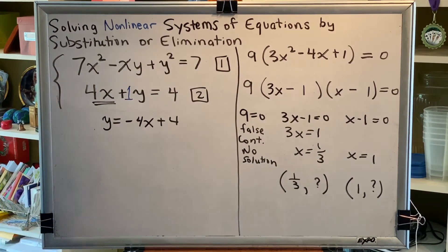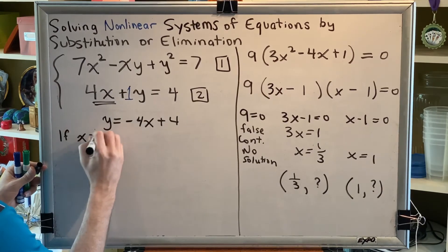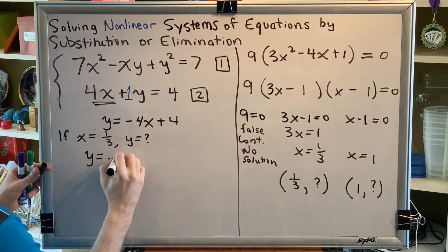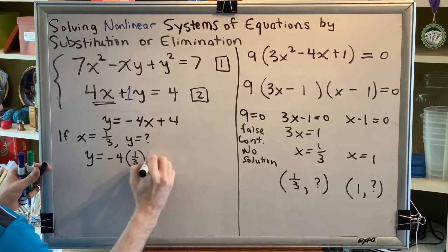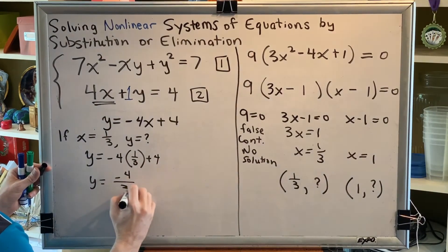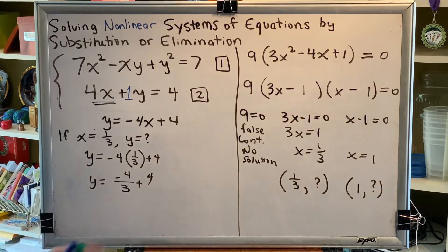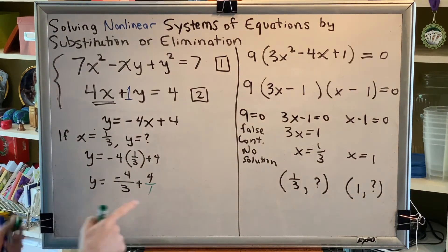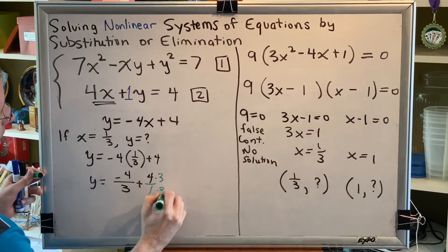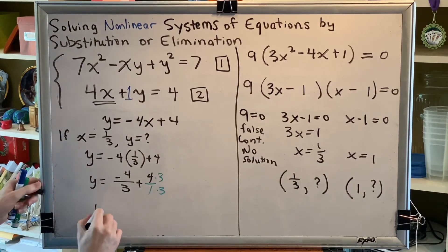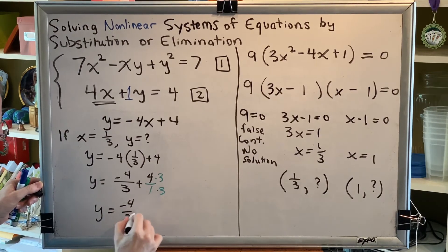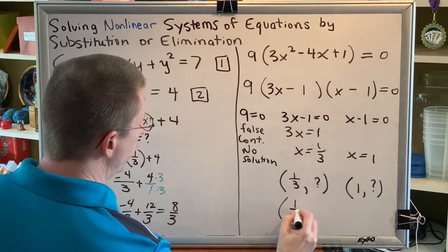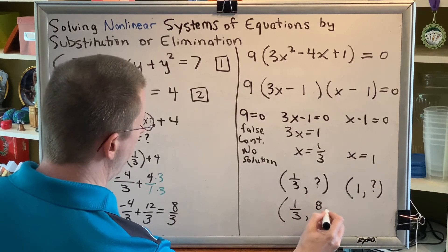So this makes a really good equation for us to plug into. If x equals 1 third, what's y? Well, let's plug in and find out. y equals negative 4 times 1 third plus 4. That would be negative 4 thirds plus 4. This is a fraction. This is an integer. In order to combine them, I need to turn the integer into a fraction. So let's write 4 as 4 over 1. And let's get a common denominator times 3 times 3. So now I have y is equal to negative 4 thirds plus 12 thirds, which equals 8 thirds. So this gives me my first ordered pair solution, 1 third comma 8 thirds.